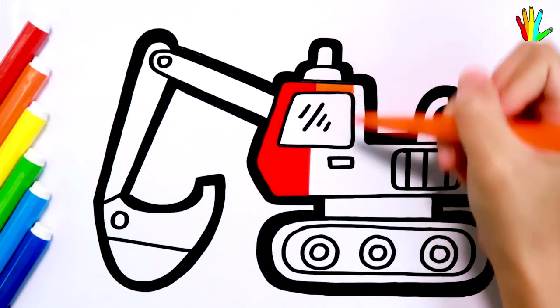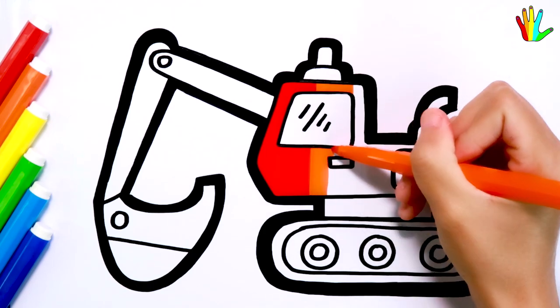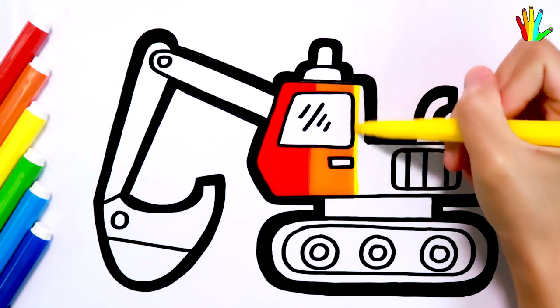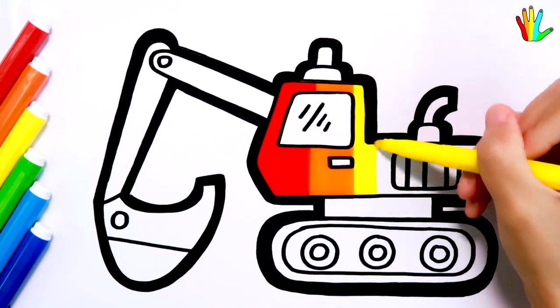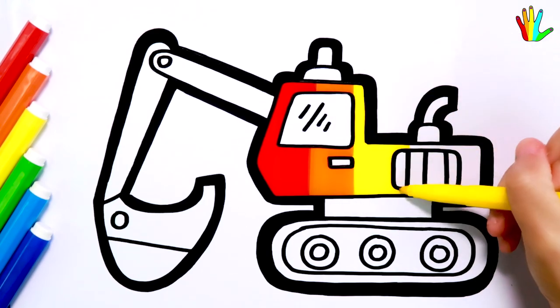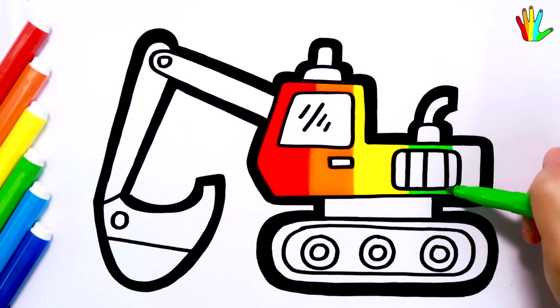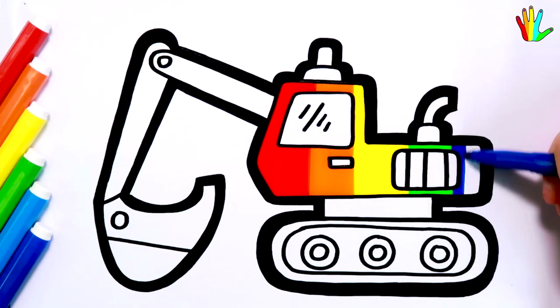Next I color it orange. Then color it yellow. Green here. Royal blue is here.